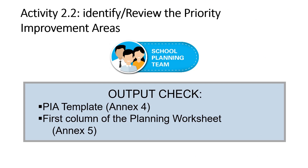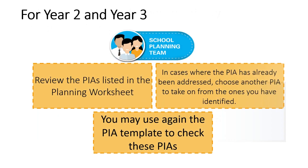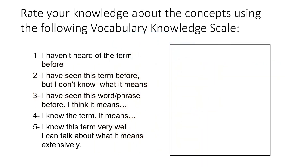Activity 2.2 — output check. We have the priority improvement template and the first column of the planning worksheet. The school planning team will review the PIAs listed in the planning worksheet. In cases where the PIA has already been addressed, choose another PIA to take on. You may use the PIA template again to check these priority improvement areas.